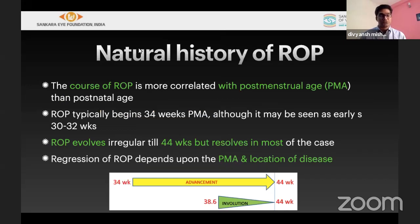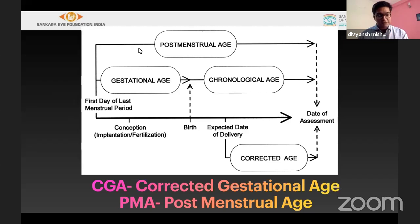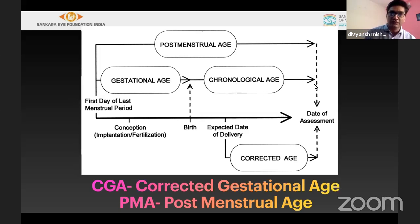Regarding the natural history of ROP, we need to understand post-menstrual age. ROP typically evolves from 34 to 44 weeks, and beyond that it usually subsides, so we keep checking until around 45 to 50 weeks. Post-menstrual age is calculated by adding the chronological age to the gestational age — for example, a child born at 28 weeks seen at 2 weeks of life has a post-menstrual age of 30 weeks.